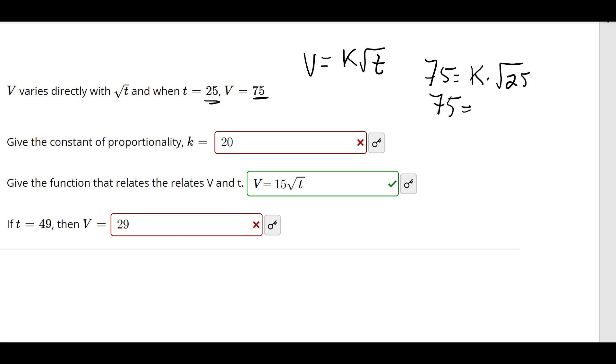So 75 equals k times 5, we're solving for k, and by the way, k is the constant of proportionality.